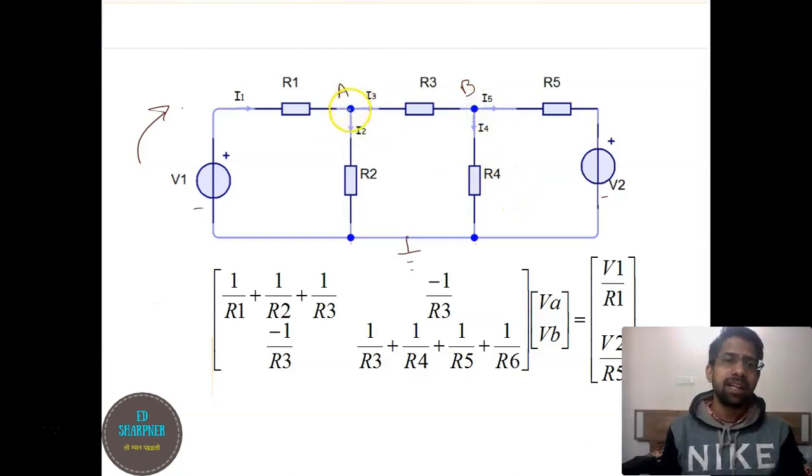While we apply KCL at node A and node B, we get some equations and we have to express those equations in matrix form. But the equations are in the form of summation of currents. Now we have to express each current as the division of voltage by resistance.